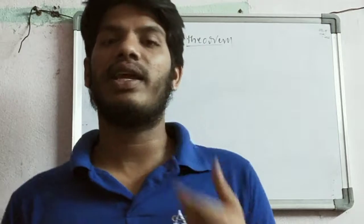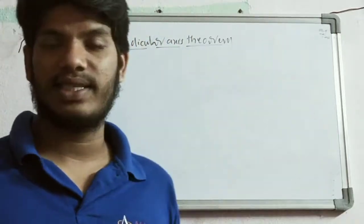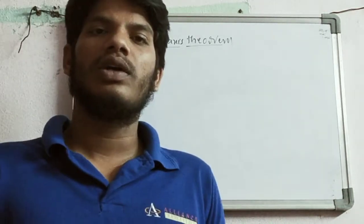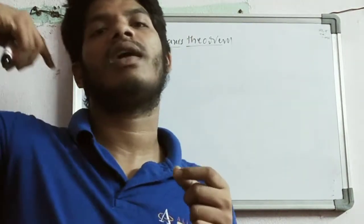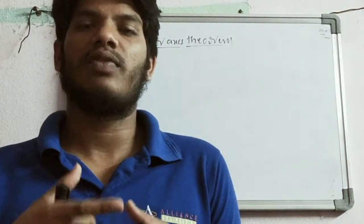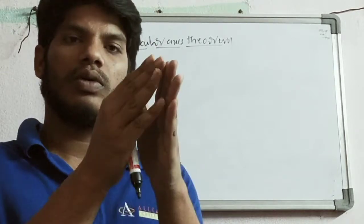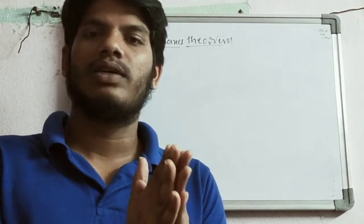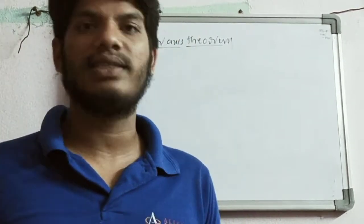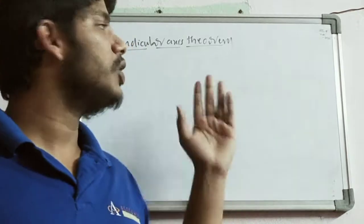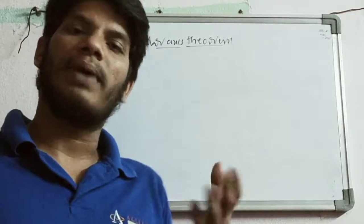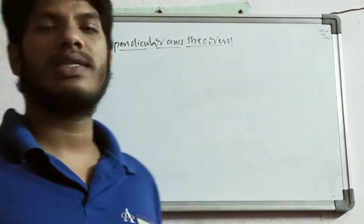We have seen the elementary area moment of inertia about the y-axis and about the x-axis. If you know those values and want to find out the moment of inertia about any other axis, or if you know the moment of inertia of a body about one axis and want to find it about another axis, we use the theorems of moment of inertia — the perpendicular axis theorem and the parallel axis theorem.